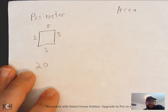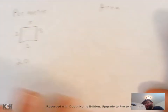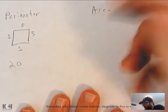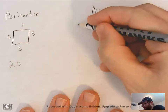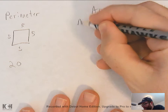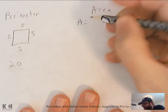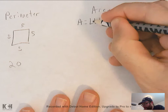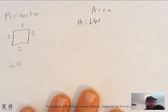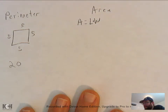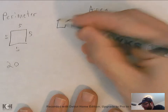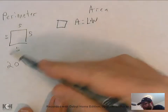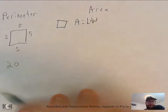Pretty straightforward! For area, there are a couple of shapes we're going to be talking about in ninth grade. We're going to have rectangles, squares, and other quadrilaterals. For those, area is just length times width — or base times height. It's the same thing, and that is for squares and rectangles.